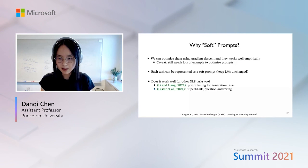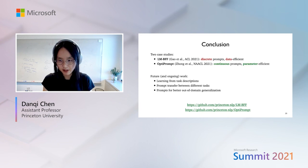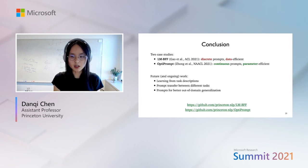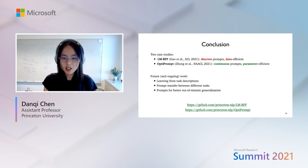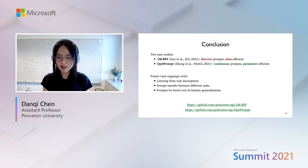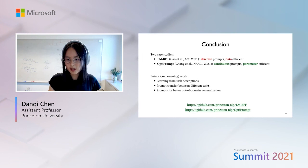To wrap up: in this talk, I discussed two types of prompt methods — the discrete prompt method LM-BFF and the continuous prompt method OptiPrompt. There is a lot of exciting work going on in this space right now, with many possible future directions including learning from task descriptions, using prompts for task transfer and generalization, and achieving better out-of-domain generalization. Code and models for both works are available at the links provided. Thank you for listening.